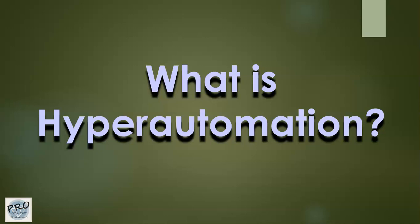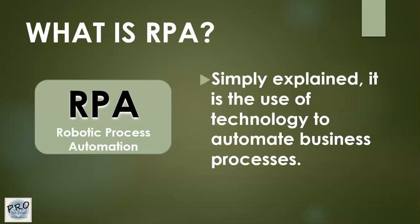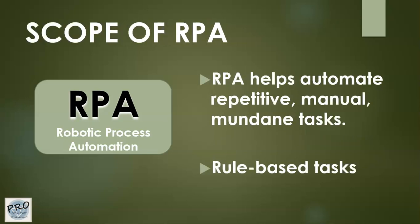In this video we will cover what hyper automation is all about and explain it in simple terms. We all know what RPA is — RPA is nothing but the use of technology to automate business processes, and there are certain limitations when it comes to what RPA can do and what it cannot do.